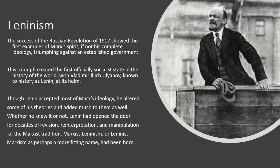The success of the Russian Revolution of 1917 showed the first examples of Marxist spirit triumphing against an established government — the Tsar's government in pre-revolutionary Russia. This created the first officially socialist state in history, with Vladimir Lenin at its helm. Though Lenin accepted most of Marxist ideology, he altered some theories and added much to them. Lenin had opened the door for decades of revision, reinterpretation, and manipulation of the Marxist tradition. Marxist-Leninism — or Leninist Marxism — had been born.